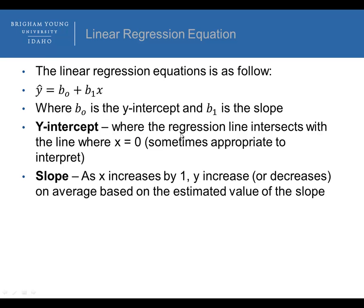The y-intercept is where the regression line intersects the line where x equals 0, and sometimes it is appropriate to interpret it. The slope, by definition, means that as x increases by 1 unit, y increases or decreases on average by the estimated value of the slope. For example, if the slope is 2.5 and x increases by 1, then y increases on average by 2.5.